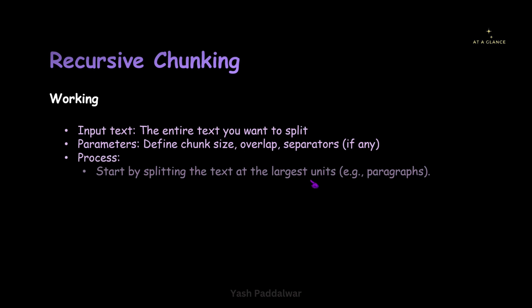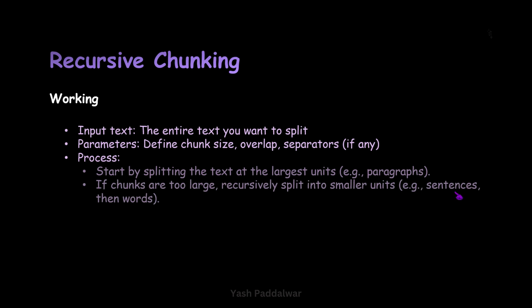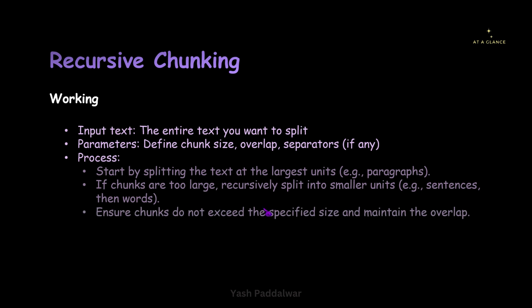Once our splitter is defined, it will start the process. It starts by splitting the text at the largest unit — paragraphs. It will take the entire file as input, check for paragraphs, and first split on the basis of paragraph. Then it will look at the chunk size. If the chunk size defined is lesser than the paragraph considered at that moment, it will then recursively split it into smaller units — for example sentences or words. This process will continue until it reaches a size that matches the chunk size. It may not be exact, but it will be approximately the same and will not exceed the specified chunk size. If overlap is defined, it will maintain that too.